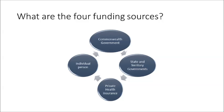Let's summarise the four funding sources for the primary health care system. Firstly, there's Medicare Benefits Schedule funding via the Commonwealth Government. Then there are community health services, which are state and territory government funding sources — for example, services like maternal and child health, alcohol and drug services, and ambulances. Allied health and dental care is subsidised by private health insurance. And non-medical primary health care services are covered by the individual person.